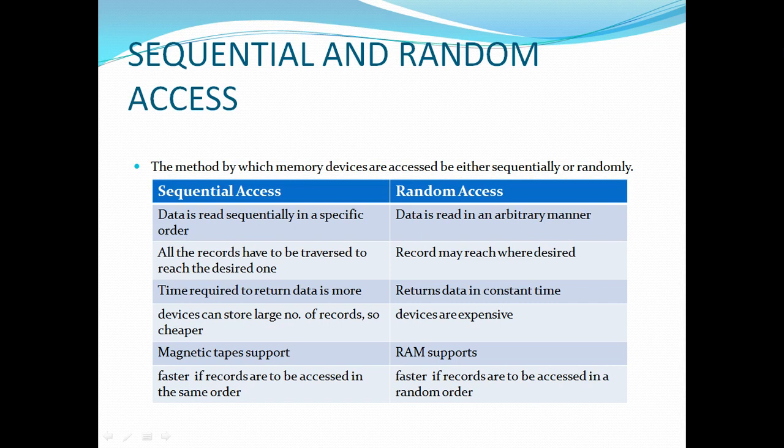In sequential access, data is read in order: 1, 2, 3, 4, 5, 6, 7 and so on. But in random access, data is read in an arbitrary manner — for example: 1, then 10, then 16, then 4, then 20, then 7, then 27, then 17, then 50 — like that. That is random access.